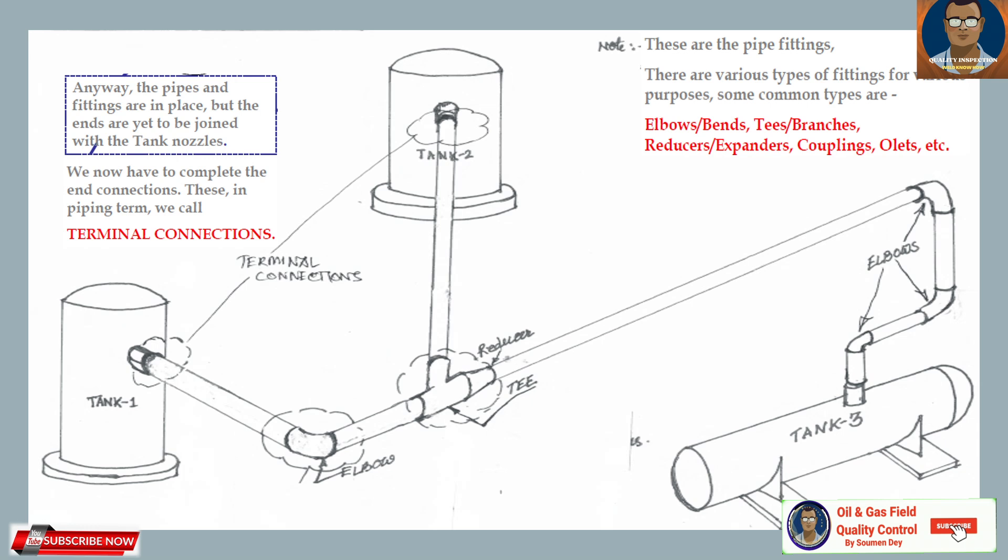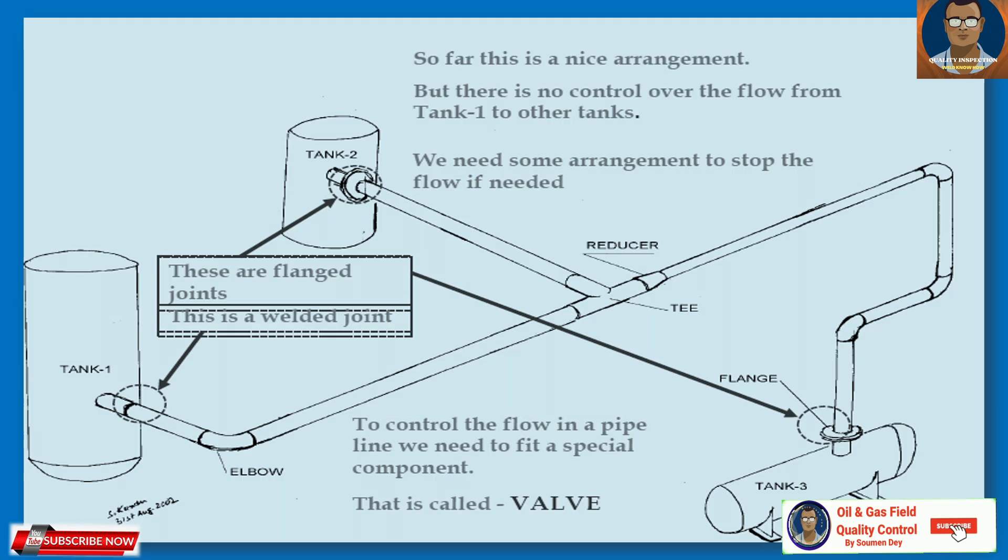The pipes and fittings are in place, but the ends are yet to be joined with the tank nozzles. We now have to complete the end connections, which in a piping system are called terminal connections. These can be flange joints or welded joints. If it is a flange joint, we put flanges at the end; if it is a welded joint, we prepare the ends with a V-groove and then connect them by welding.